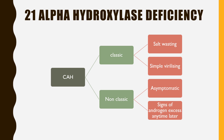21-alpha hydroxylase deficiency is the most common question asked. It is the most common deficiency of all CAH forms, accounting for up to 90% of cases. It is divided into classical and non-classical. Classical is again divided into salt-wasting and simple virilizing varieties. Non-classical can remain asymptomatic or present with signs of androgen excess like pubic hair development, menstrual irregularities, acne, and hirsutism.